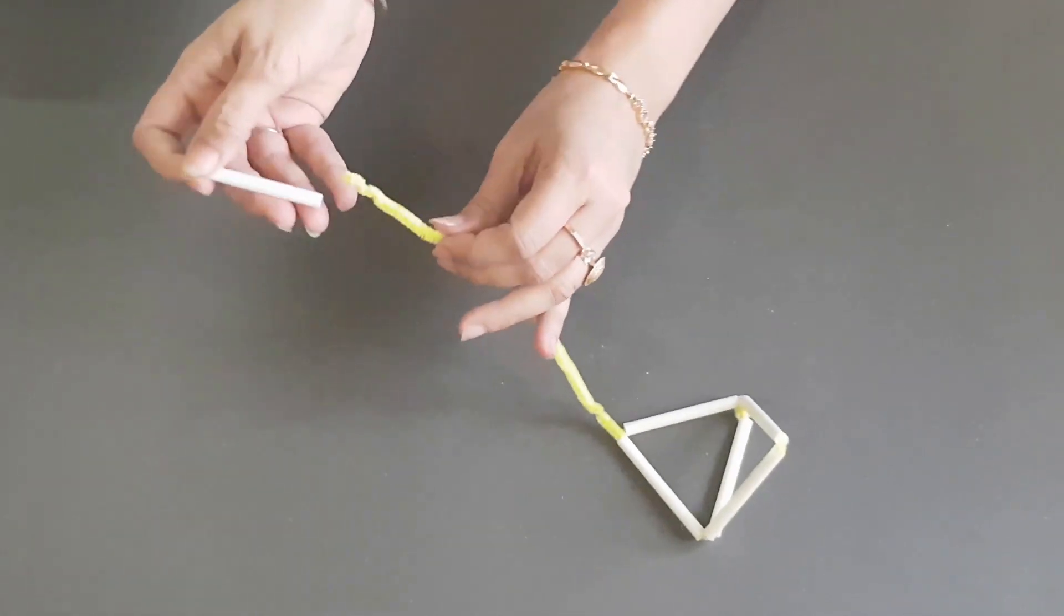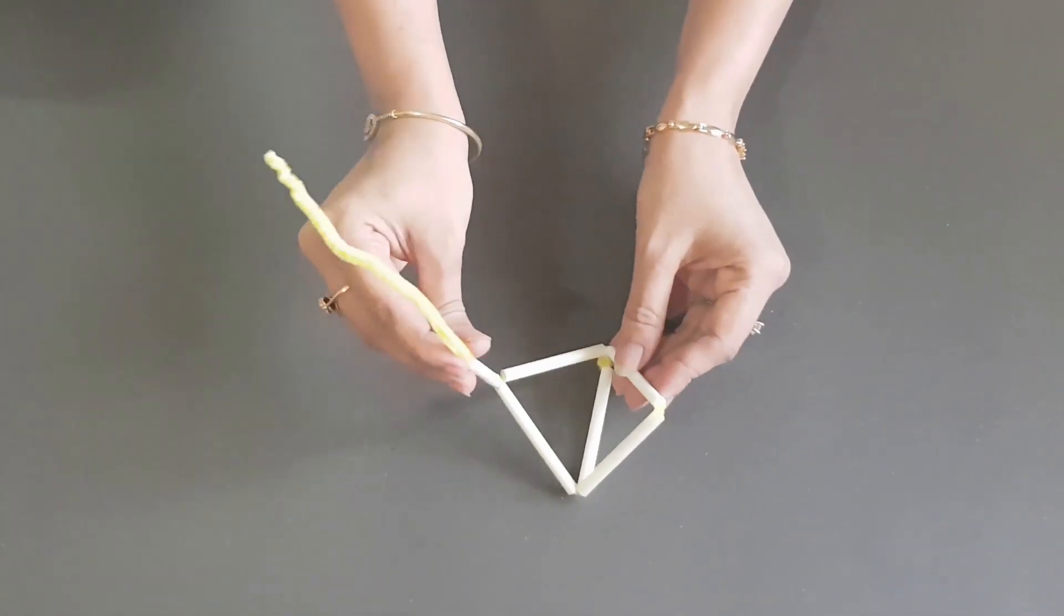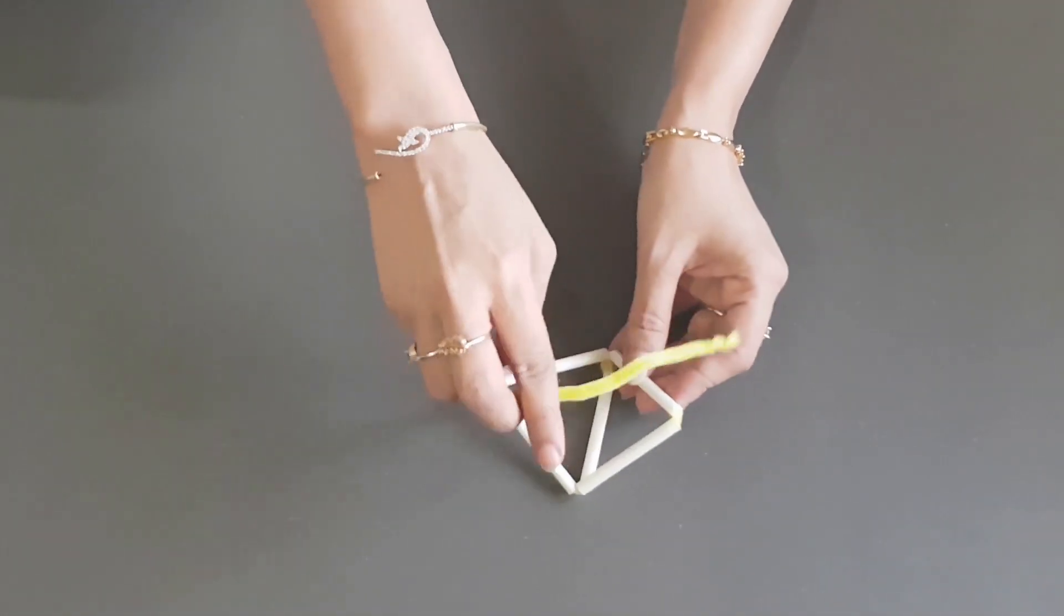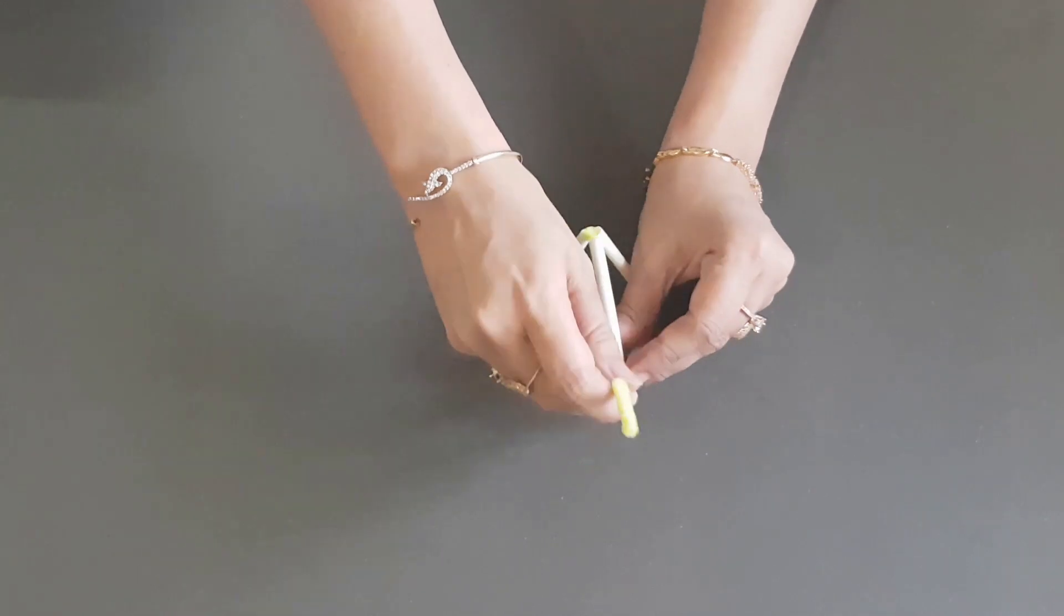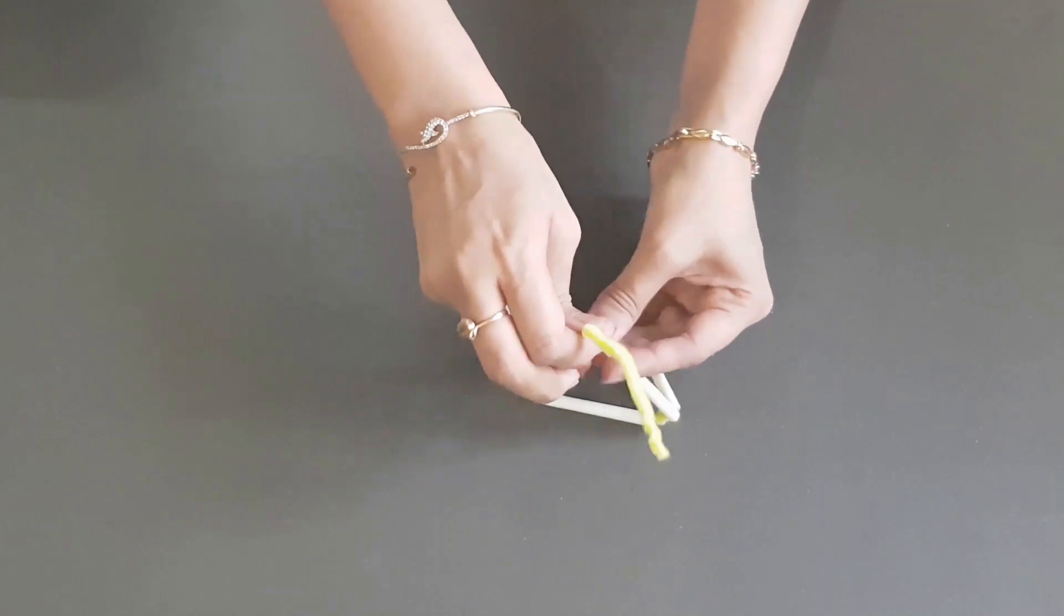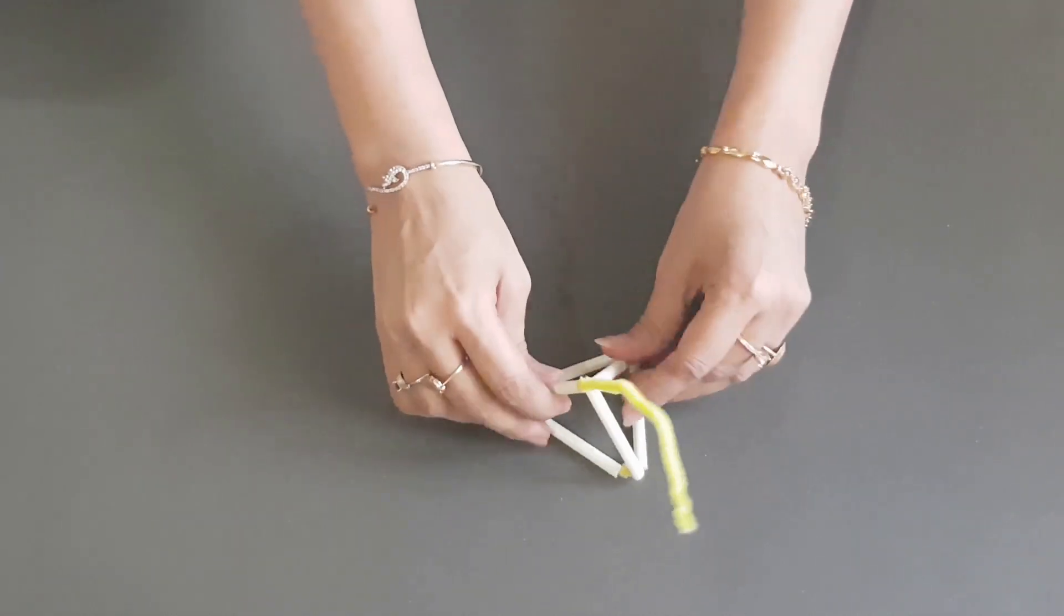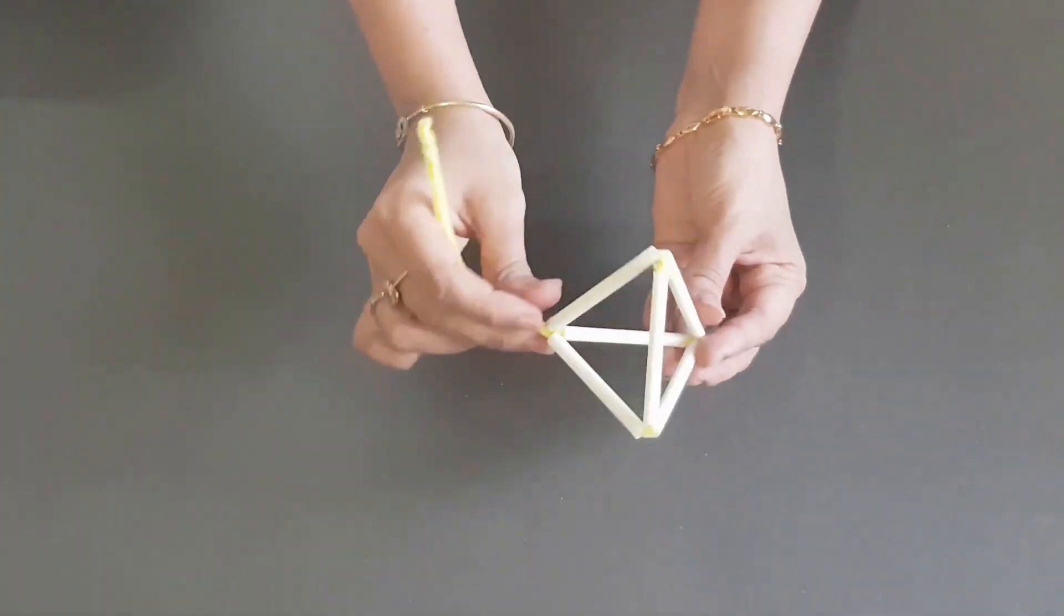I only need one more straw. And now I'm going to make this pipe cleaner go through like this and I'm going to twist it so that I have a firm shape. Yay! We have the pyramid ready.